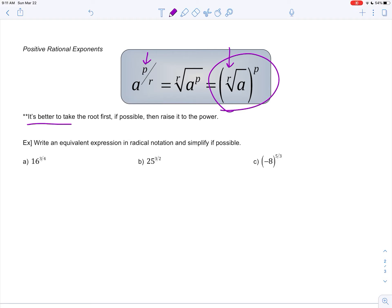So for doing these, I'll go ahead and take the root first. So this is the 4th root of 16 to the 3rd power. So that would be 2 to the 3rd power, which is 8. Same thing here. The index is 2, so it's the square root of 25 to the 3rd power. So 5 to the 3rd power, 125.